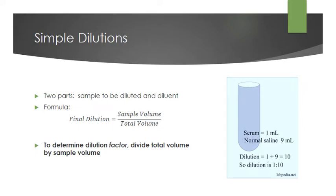For simple dilutions, remember there are always two parts: the sample to be diluted and the diluent. The formula for a simple dilution is sample volume divided by total volume. To determine the dilution factor, you divide the total volume by the sample volume, which is the inverse of the simple dilution formula. It may be easier to just remember the dilution factor formula, since once you have the dilution factor you can figure out your dilution very easily.